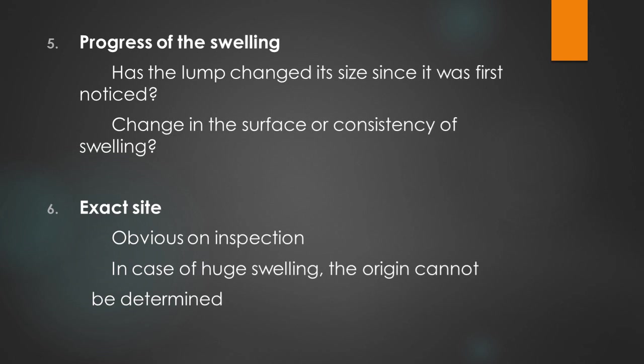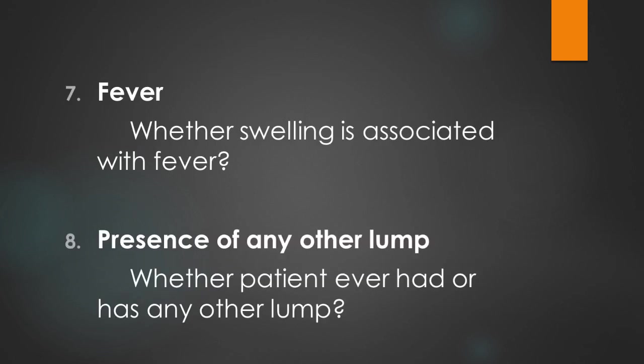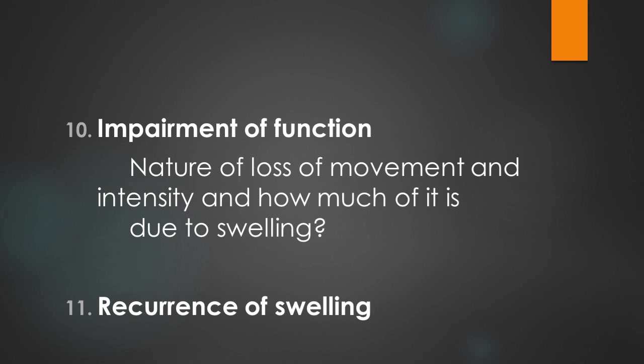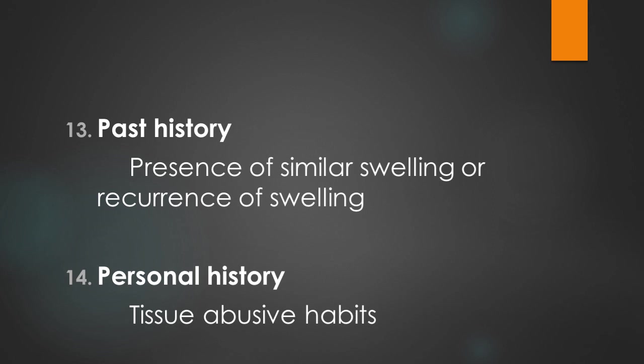The exact site of the swelling is obvious on inspection. We also ask about fever — if the swelling is associated with fever, it is an inflammatory swelling. We ask about the presence of any other lumps, such as seen in neurofibromatosis or Hodgkin's lymphoma. Impairment of function is noted — whether there was any loss of movement due to the swelling. Recurrence is also noted: malignant or cystic swellings recur when the cyst wall is not completely removed. In past history, similar swellings recur in conditions such as syphilis and tuberculosis.